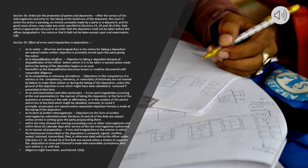Section 29. Effect of Errors and Irregularities in Depositions. As to Notice: All errors and irregularities in the notice for taking a deposition are waived unless written objection is promptly served upon the party giving the notice. As to Disqualification of Officer: Objection to taking a deposition because of disqualification of the officer before whom it is to be taken is waived unless made before the taking of the deposition begins or as soon thereafter as the disqualification becomes known or could be discovered with reasonable diligence. As to Competency or Relevancy of Evidence: Objections to the competency of a witness or the competency, relevancy, or materiality of testimony are not waived by failure to make them before or during the taking of the deposition, unless the ground of the objection is one which might have been obviated or removed if presented at that time.